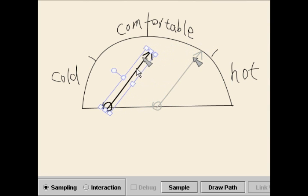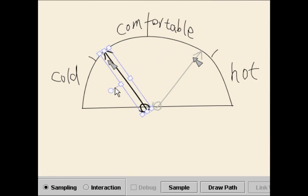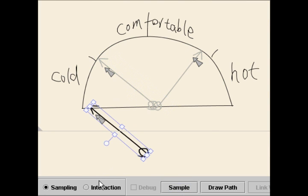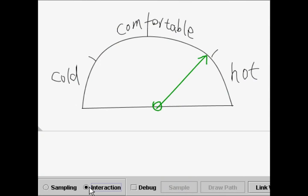Next, the designer drags the needle to another position, rotates it, and takes another sample. With these two samples, a designer goes to interaction mode and interacts with the needle to test the interaction.